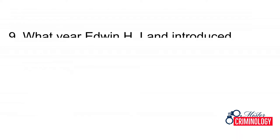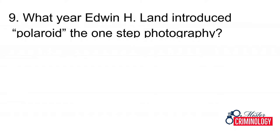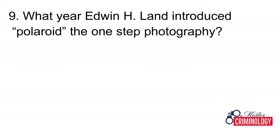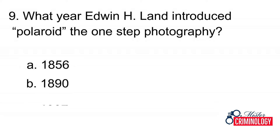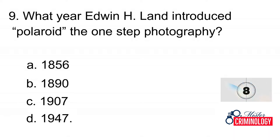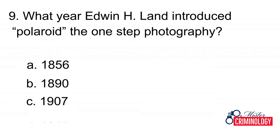Question 9: What year did Edwin H. Land introduce Polaroid's one-step photography? A. 1856, B. 1890, C. 1907, D. 1947. Answer: D. 1947.